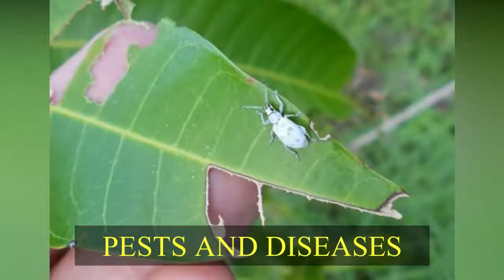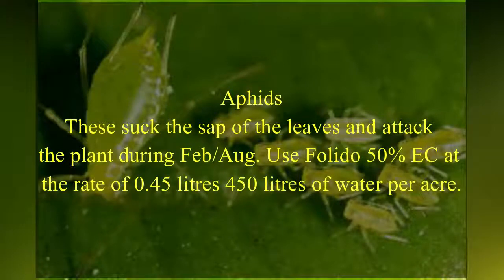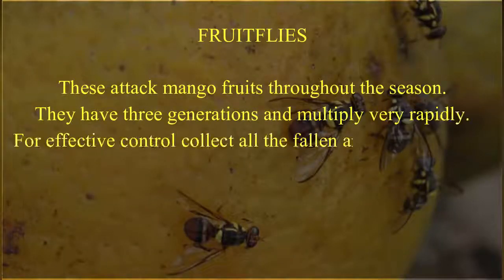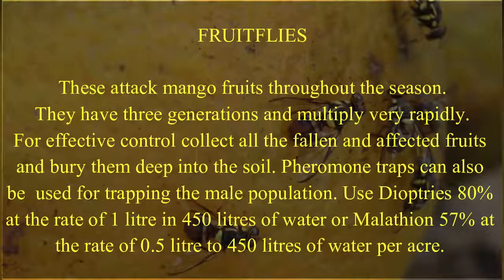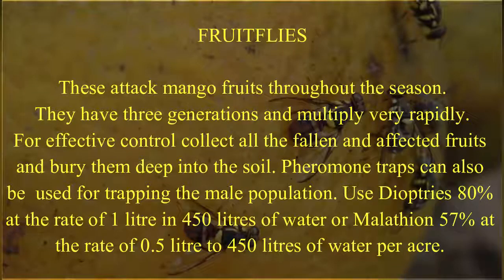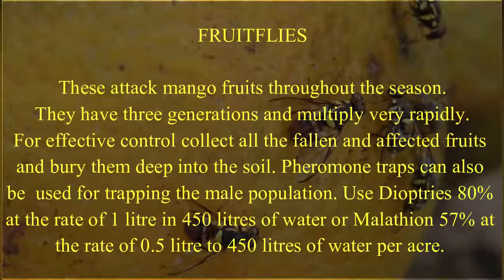Pests and Diseases. Hoppers: these suck the sap of the leaves and attack the plant during February–August. Use Folidol 50% at the rate of 0.45 liters in 450 liters of water per acre. Fruit flies: these attack mango fruits throughout the season and have 3 generations, multiplying very rapidly. For effective control, collect all fallen and affected fruits and bury them deep into the soil. Pheromone traps can also be used. Use Dimethoate 80% at 1 liter in 450 liters of water, or Malathion 57% at 0.5 liter in 450 liters of water per acre.